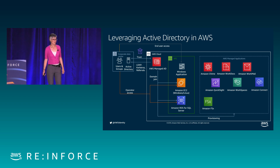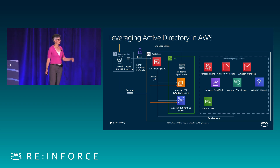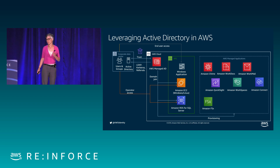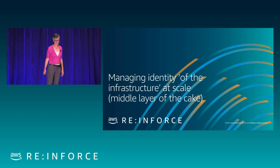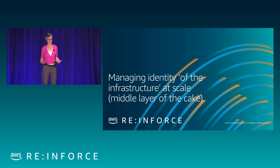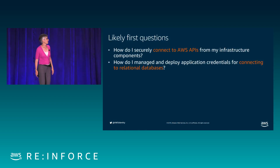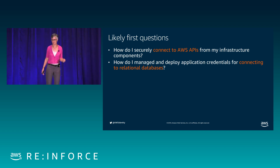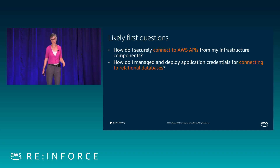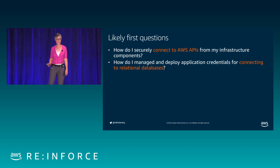Cognito gives you really broad identity support so you can reach the broadest group of end users, and they can use whatever identities they have to get to your application. It does that in a standards-based way so all that detail is abstracted — you don't have to worry about supporting SAML or OIDC, Cognito does that for you with a consistent API interface. On top of all that, it gives you advanced security features like adaptive authentication, where if an end user's sign-in looks different — perhaps they're coming from a different IP address than usual — it will prompt them for an additional factor.